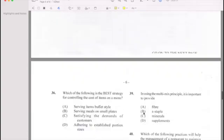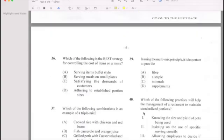Number 36: Which of the following is the best strategy for controlling the cost of items on a menu? Answer is D.